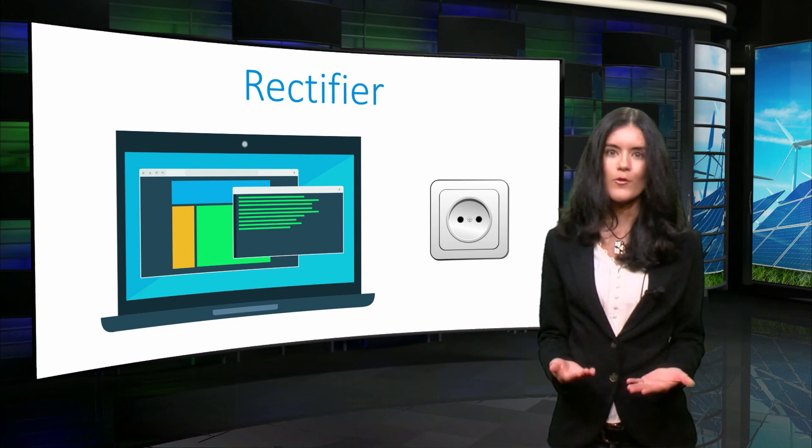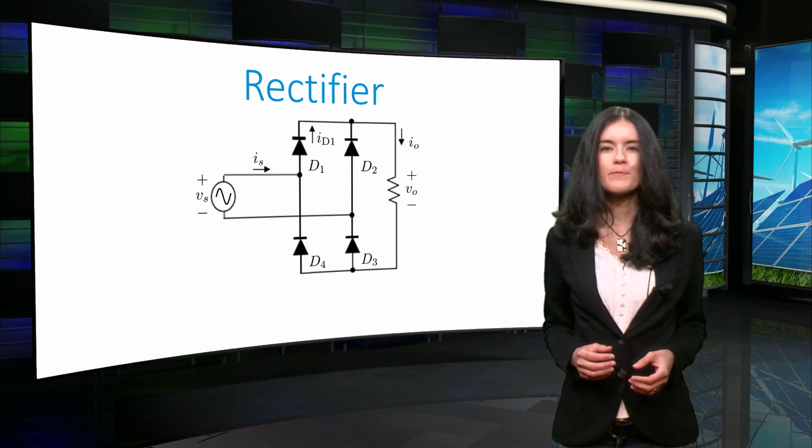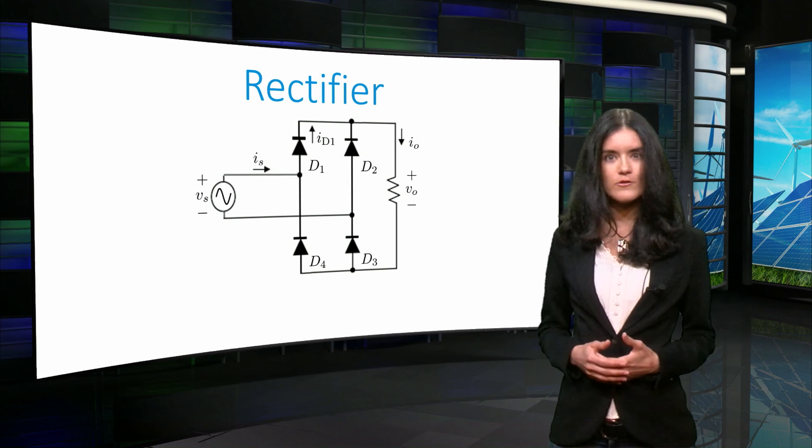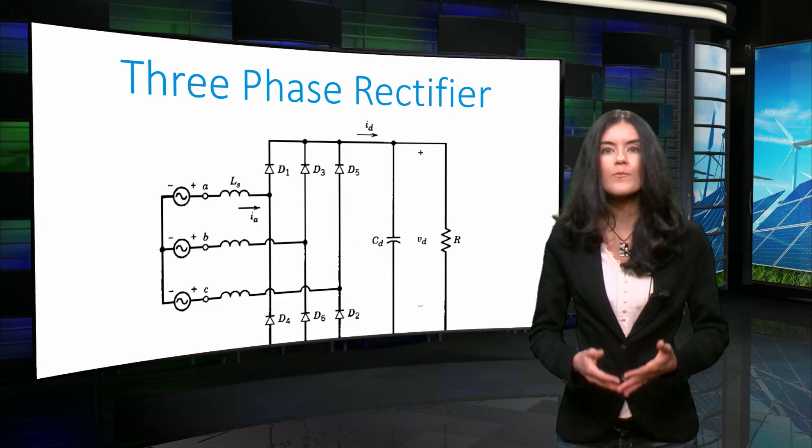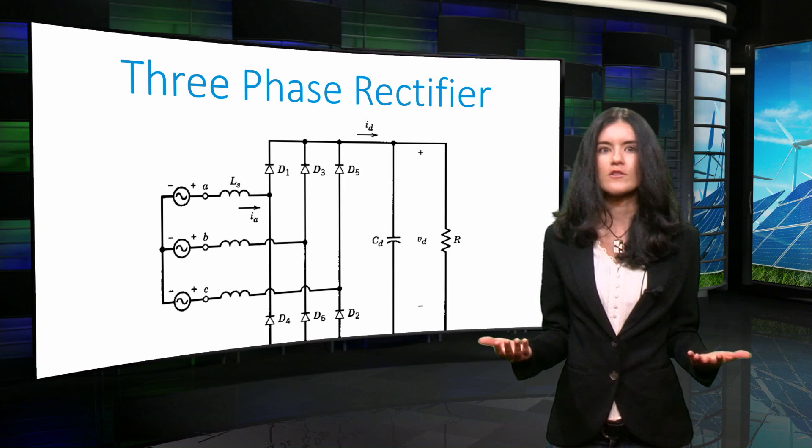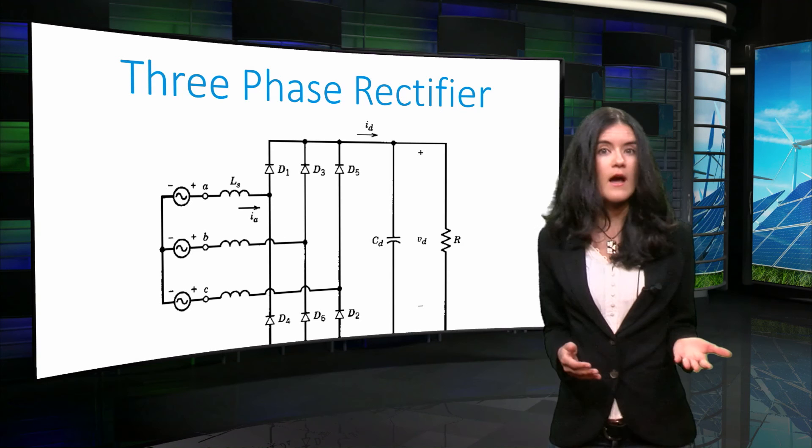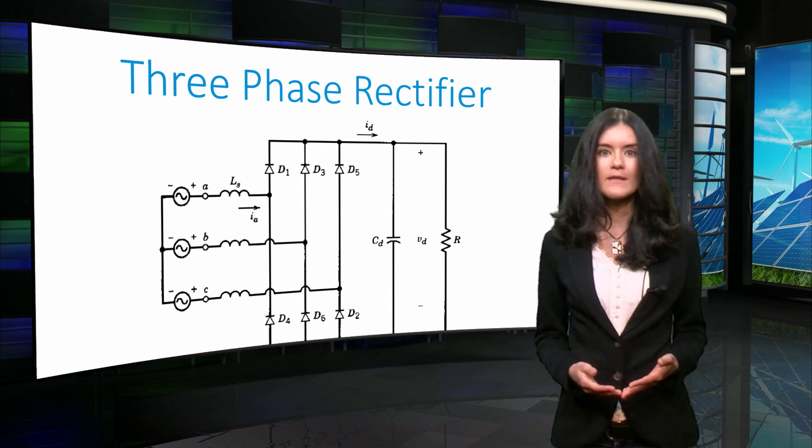Today, we analyzed a very simple topology consisting of only 4 diodes. However, more complex topologies are used to process the input signal into a more constant DC output voltage, or into a different DC average value. The topology used today is only a simple example.